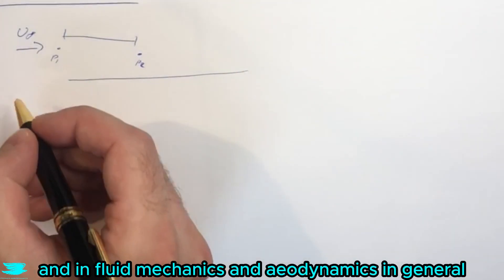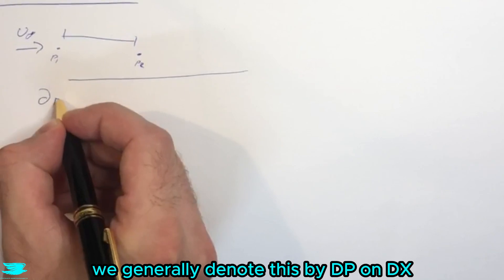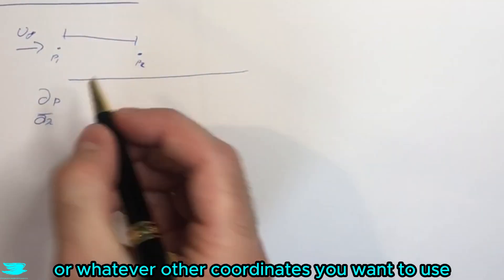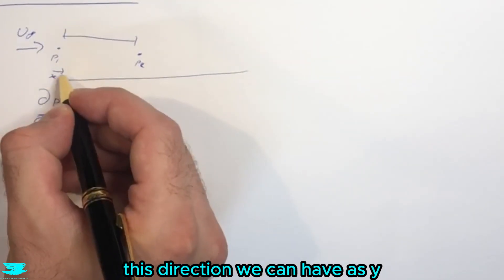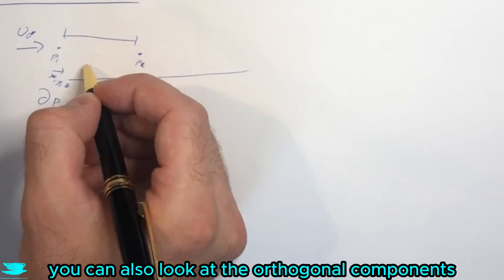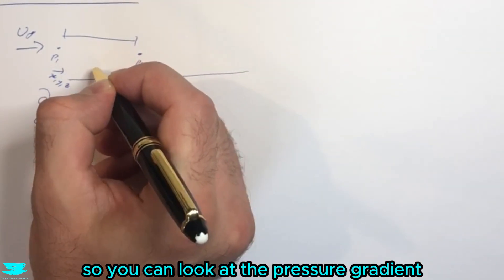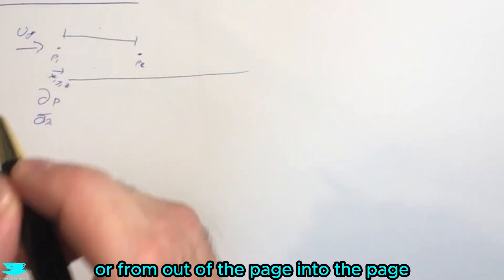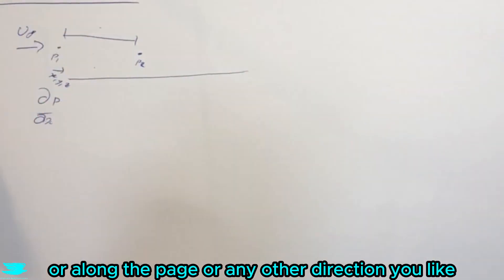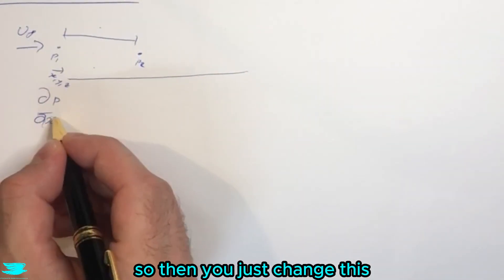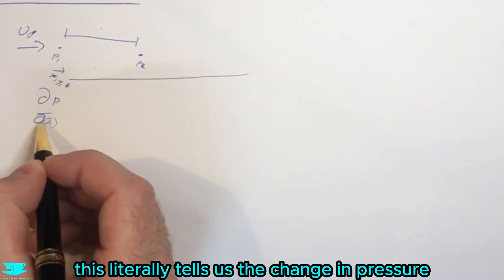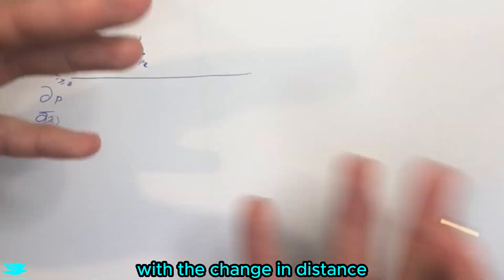In fluid mechanics and aerodynamics in general, we denote this by dp/dx or whatever other coordinates you want to use. In this particular case this is x in this direction, but you can have y or z. You can also look at the orthogonal components - the pressure gradient going from bottom to top or from out of the page to into the page. You just change this symbol to whatever is the corresponding symbol. This literally tells us the change in pressure with the change in distance.